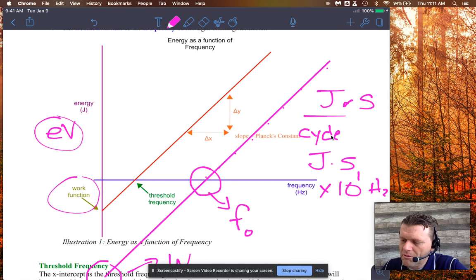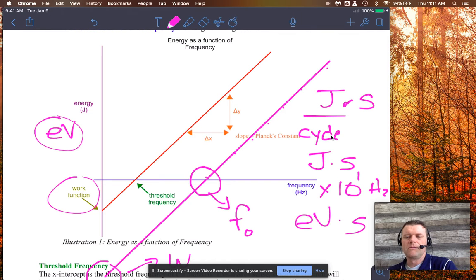Now, easily enough, if we switch that with electron volts, you'd have electron volts per Hertz or electron volts per cycle per second, which that also reciprocates to electron volt seconds, which is the other unit.